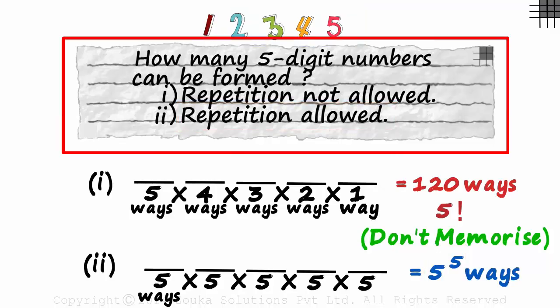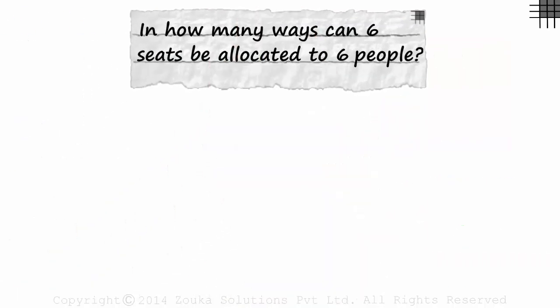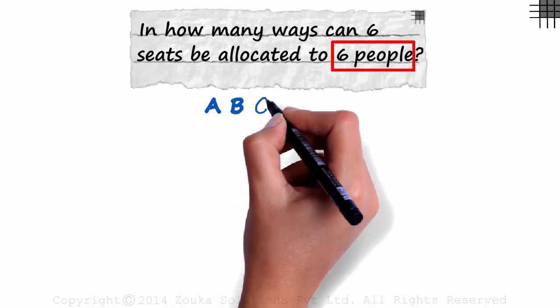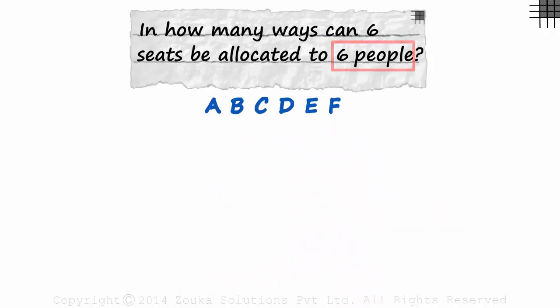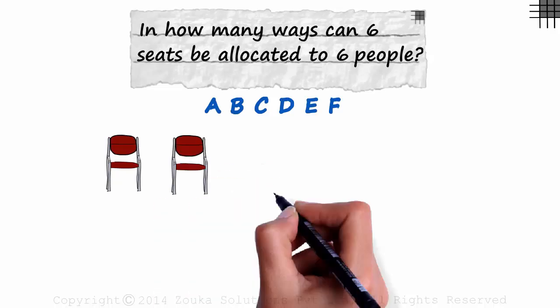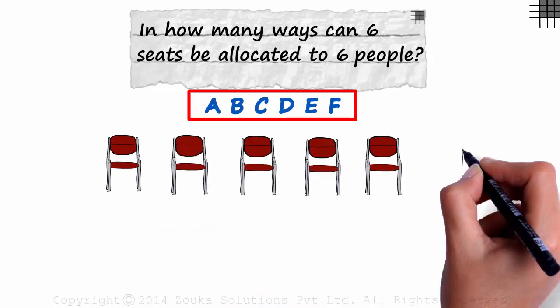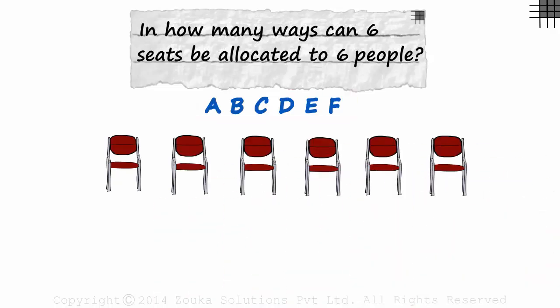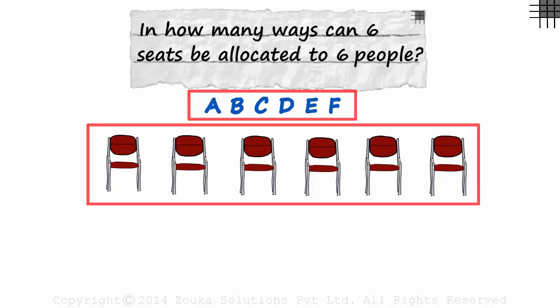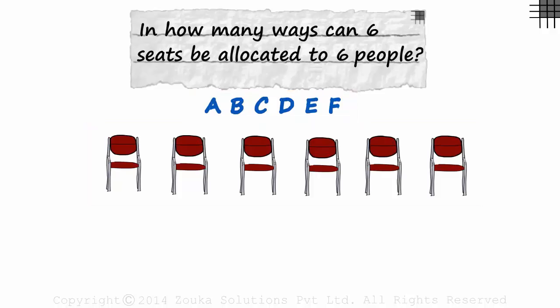These problems are easy, provided you understand the logic of repetition. Let's look at one last question: In how many ways can six seats be allocated to six people? Assume that the six people are A, B, C, D, E and F. And imagine six chairs in a row where these six people will be seated. How will you solve this? In how many ways can these six people be seated on these six chairs? Pause the video and try solving it.